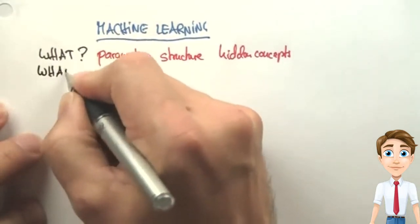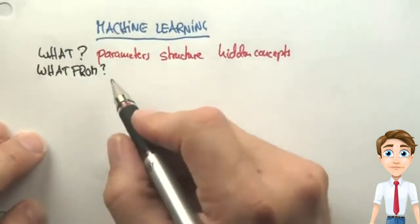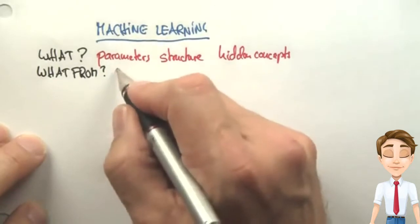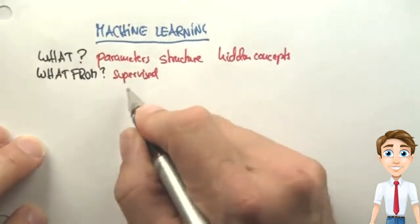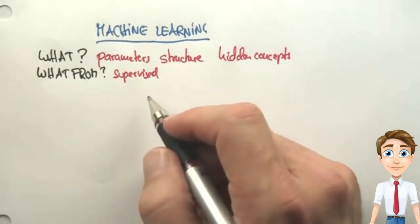Next is what from. Every machine learning method is driven by some sort of target information that you care about. In supervised learning, which is the subject of today's class, we're given specific target labels. And I'll give you examples just in a second.